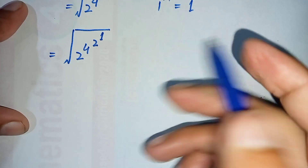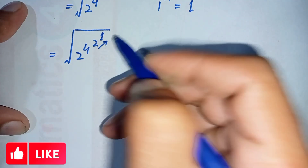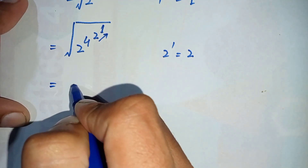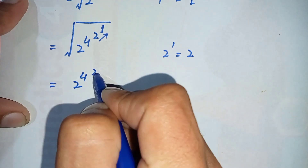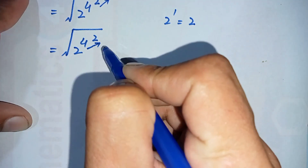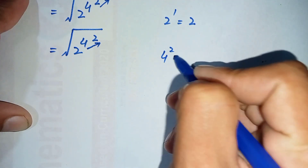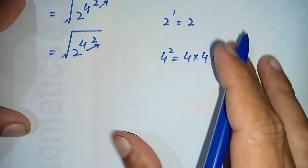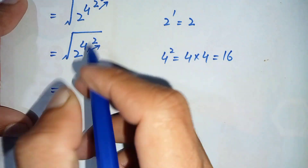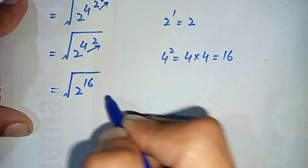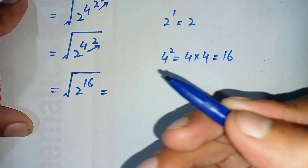And 2 raised to power 1 is the same as 2, so we replace 2 raised to power 1 with 2 in the next step. It becomes 2 raised to power 4, and 1 raised to power 2. Now 4 raised to power 2 is the same as 4 multiplied 2 times, and 4 times 4 is 16. So 1 raised to power 1 equals 1, and 2 raised to power 2 equals 16.